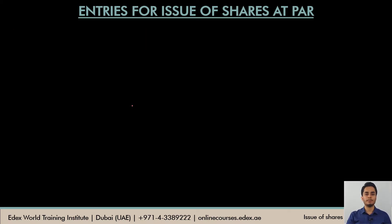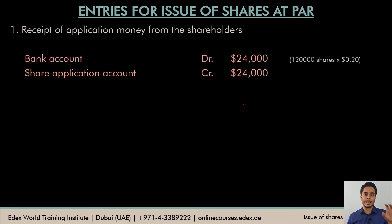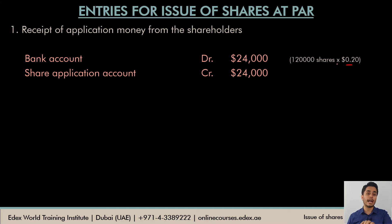The first step at the time of issue of shares is that the company will issue a prospectus offering the public to apply for shares, and then it will receive applications along with the application money. Whenever the company receives the application money, the bank account will be debited and the temporary share application account is credited. 120,000 applications were received at $0.2 per share, giving us 120,000 × 0.2 = $24,000. This is the first journal entry.